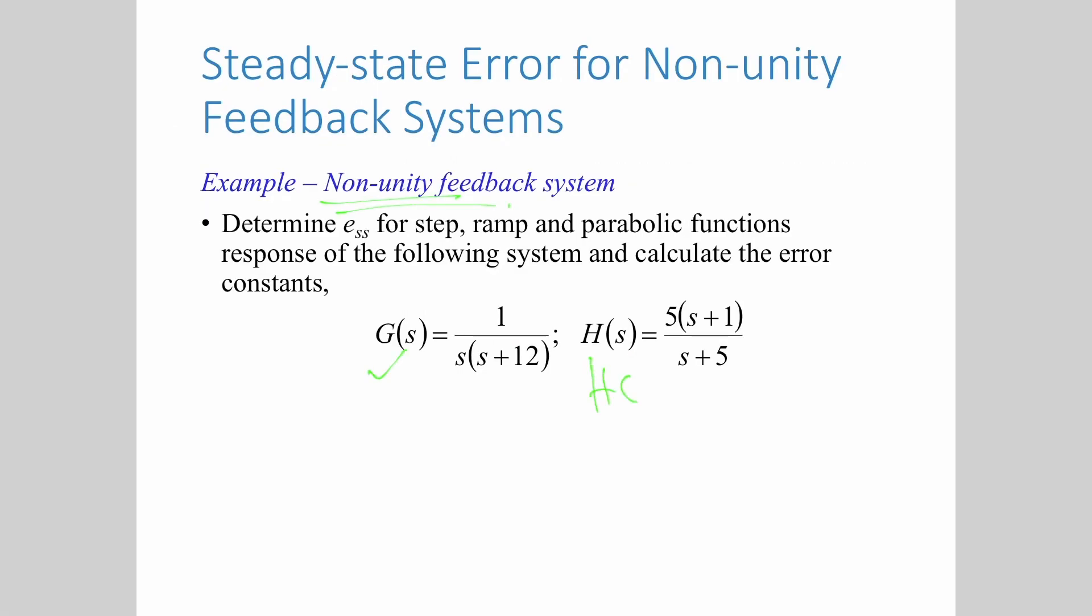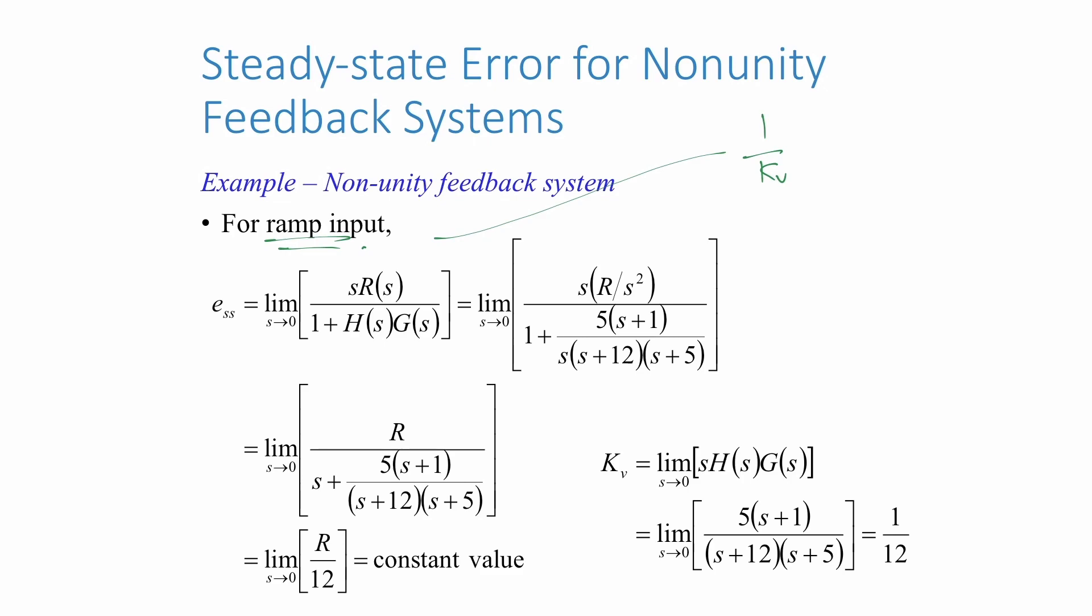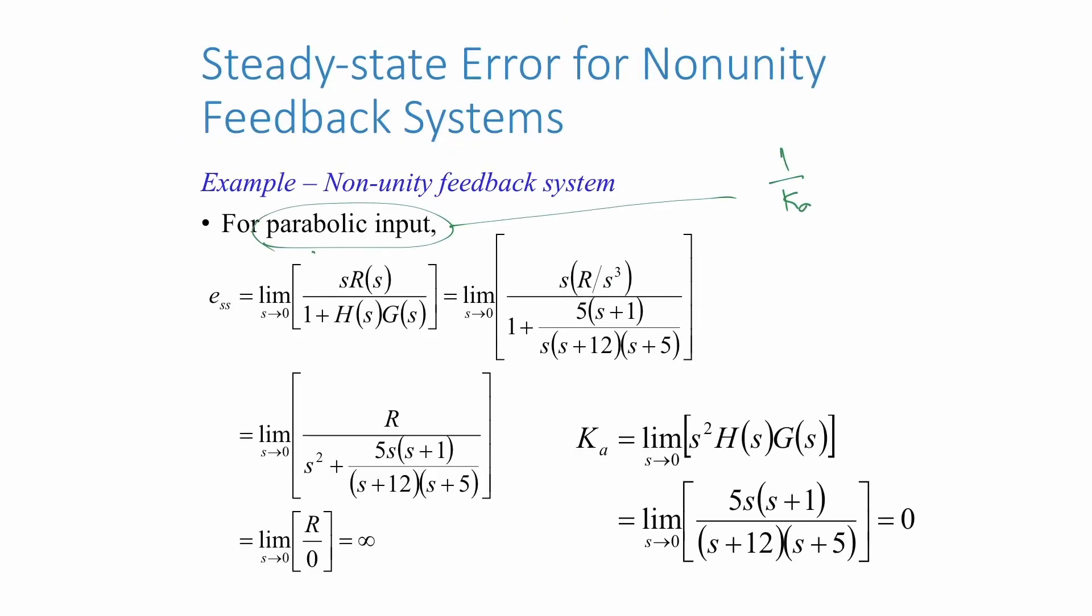Before we conclude this chapter, we will look at the system with non-unity feedback. For a step input, we can either use final value theorem or static error constant. Replacing the value of s approaching 0, we can calculate the steady state error. In a similar fashion, steady state error can be calculated for a ramp and parabolic input.